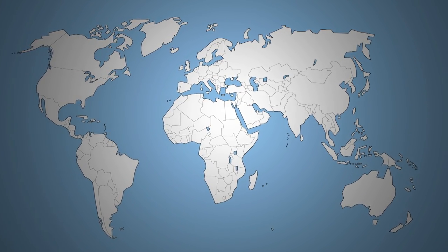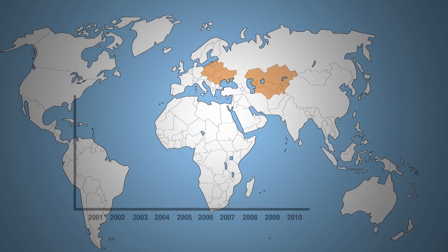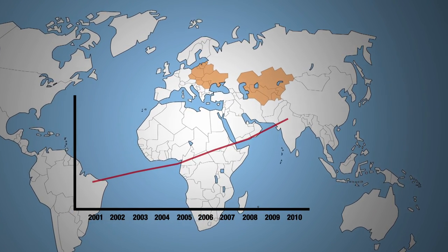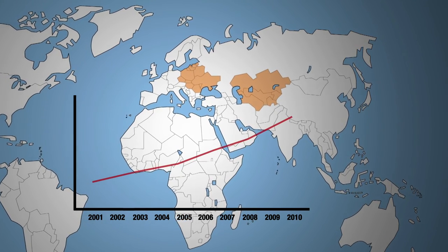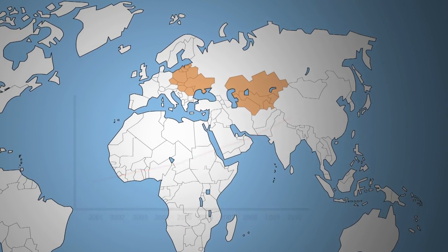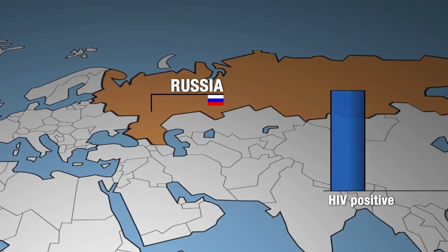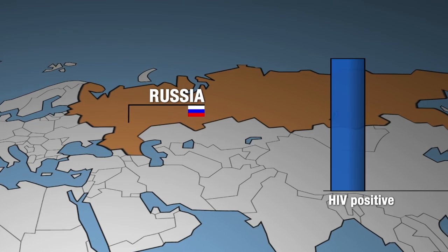But in Eastern Europe and Central Asia, the number of people living with HIV has increased by 250% between 2001 and 2010. In Russia, the number of HIV-positive cases almost doubled between 2006 and 2012.